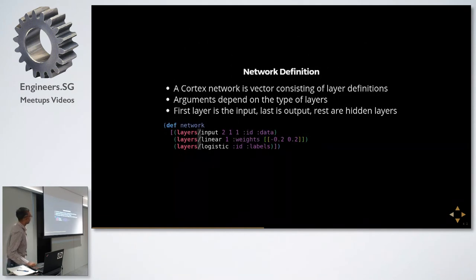This is how we define a network in Cortex. It's basically a vector, and each element of the vector is a network layer. The arguments depend on the type of layer. It's not that each layer takes the same kind of arguments. The first layer is obviously the input, and the last layer is the output. In this particular network we have just one hidden layer, which is very unusual, but just for the sake of an example I've taken this.